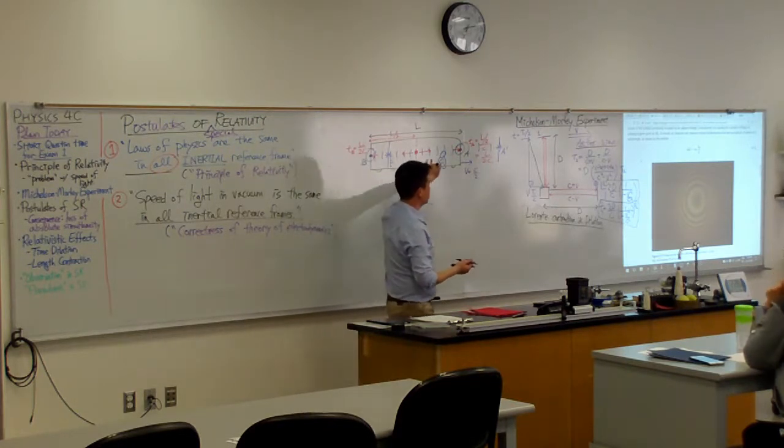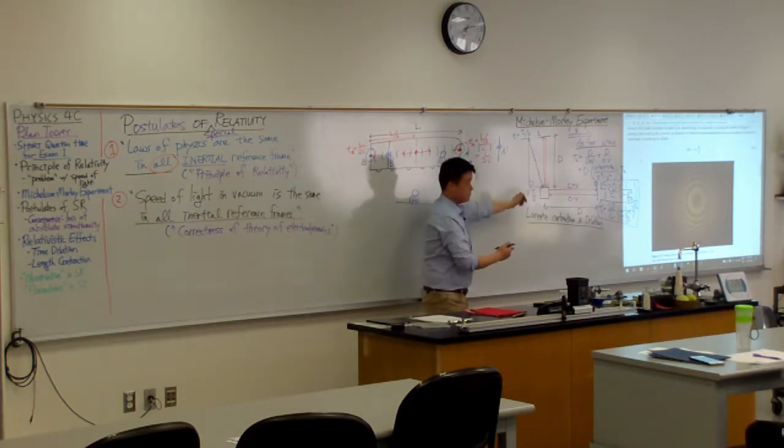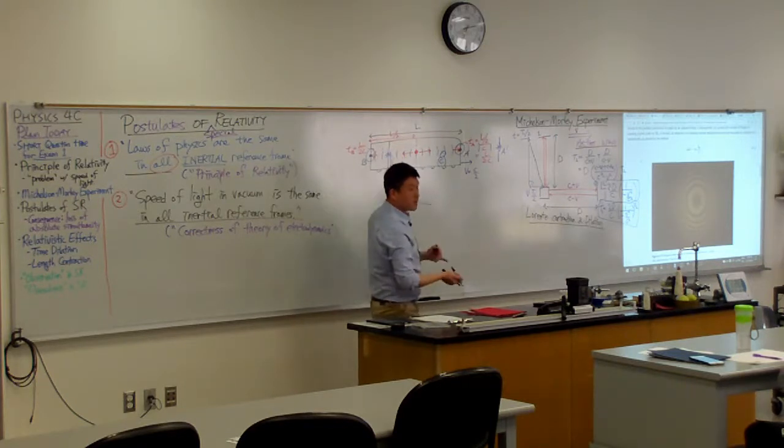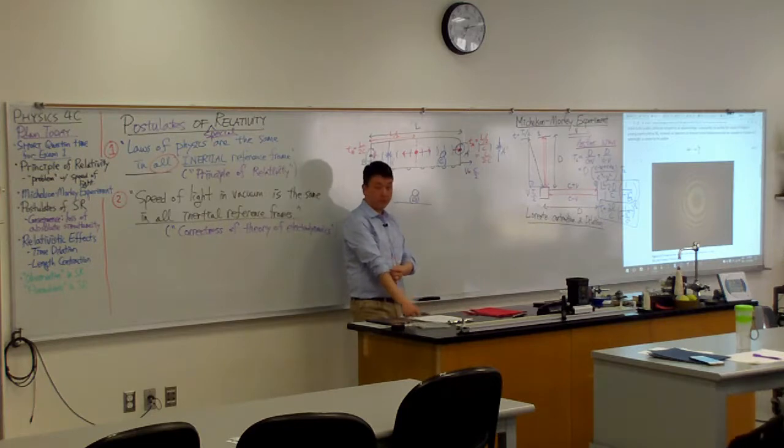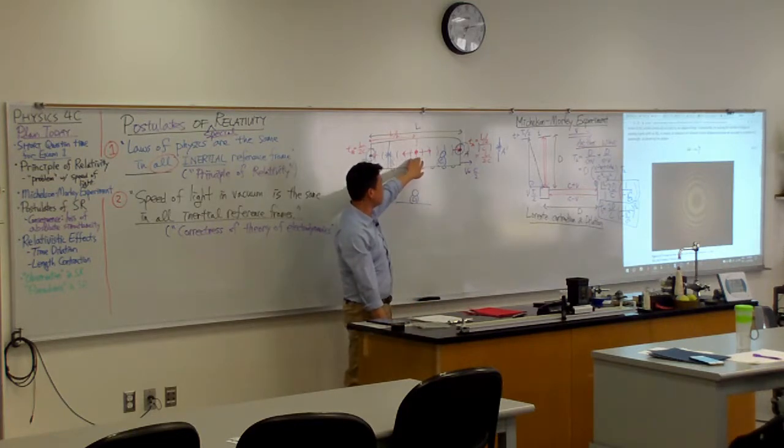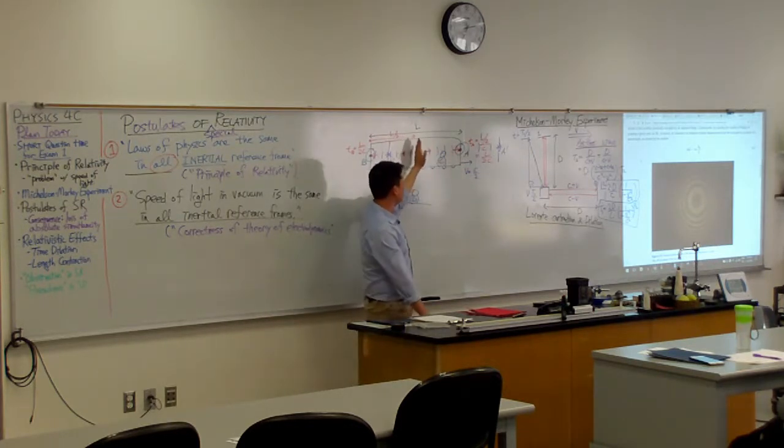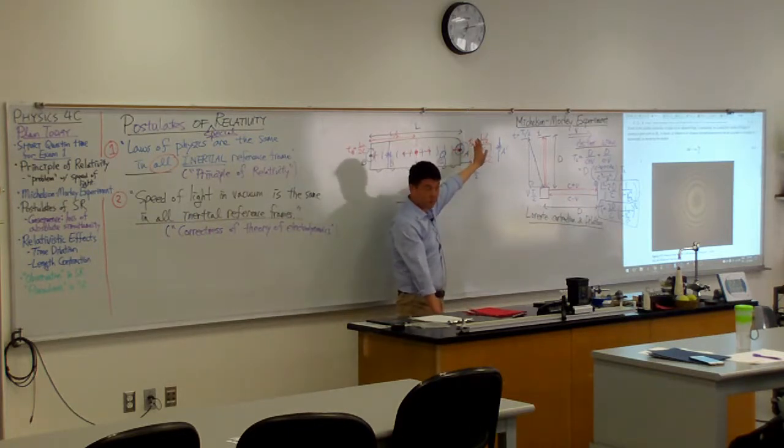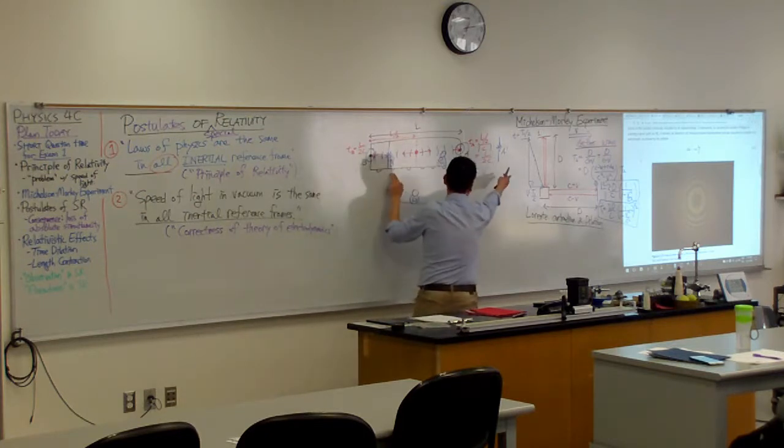Do these two events happen at the same time? You can see that here, the light had to travel longer distance. Here, light had to travel shorter distance. Now, if you're dealing with regular relativity that you're familiar, let's imagine this is a source of sound wave. Then what you would say is they happen at the same time because the sound waves travel at different speeds in different directions. The one that's moving this way moves faster. The one that's moving this way moves slower. So, they end up happening at the same time.